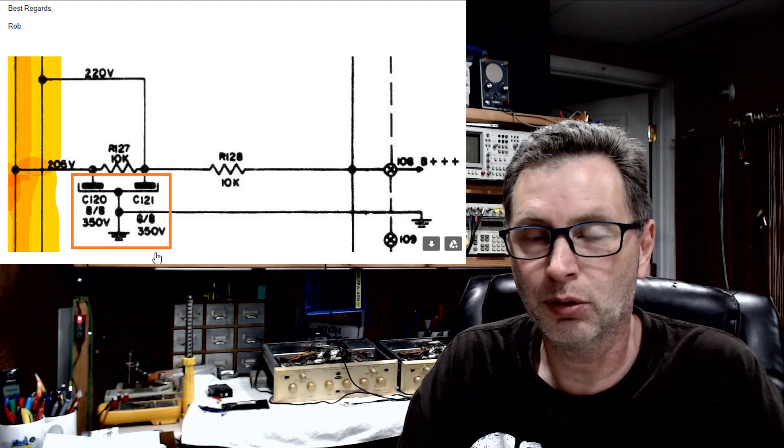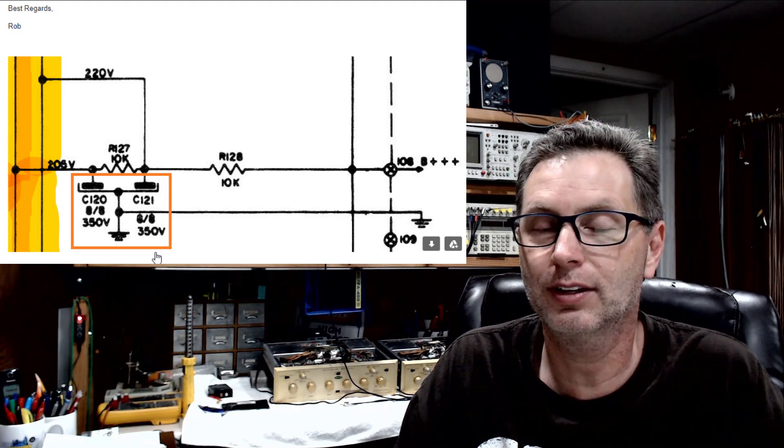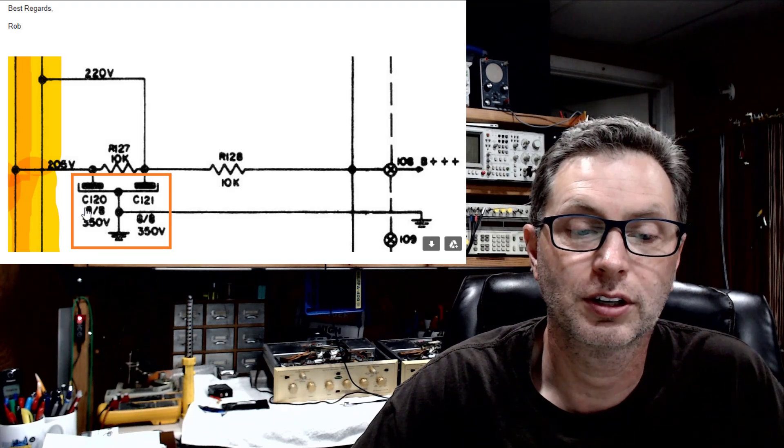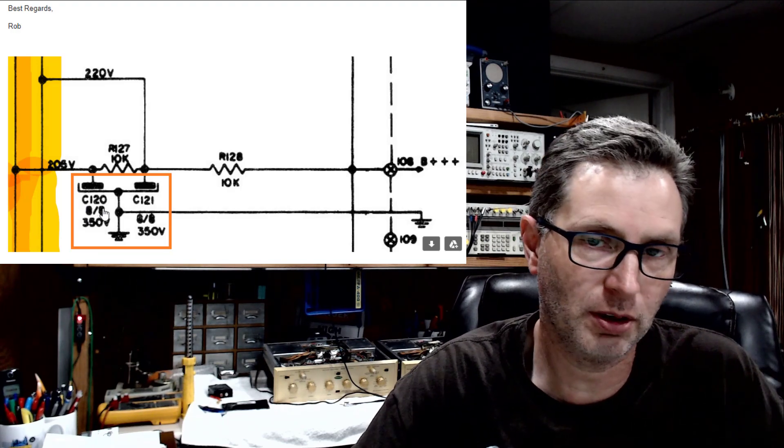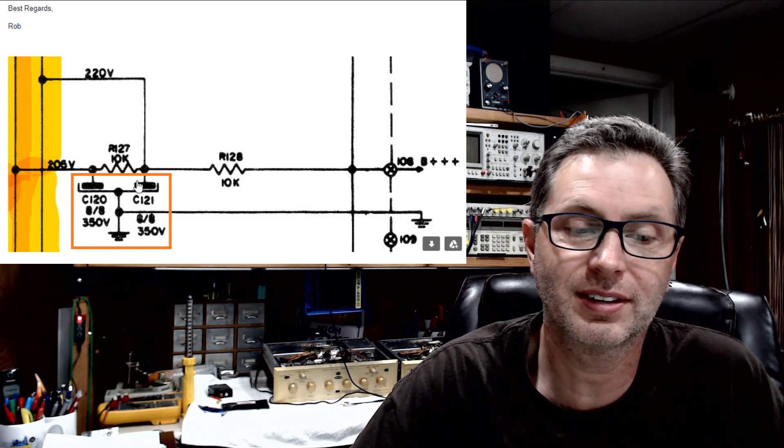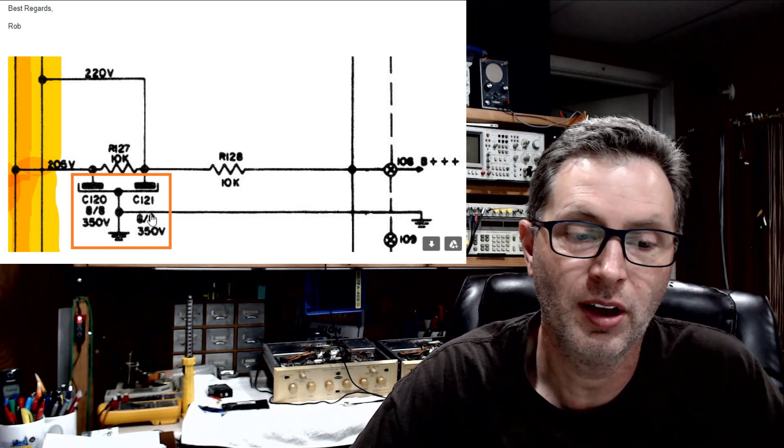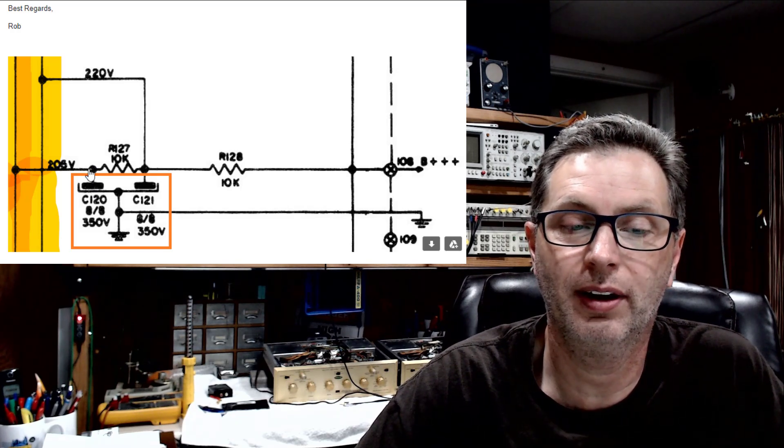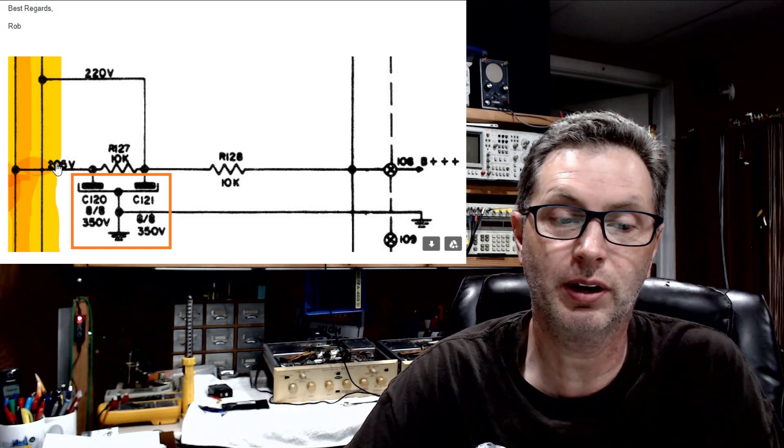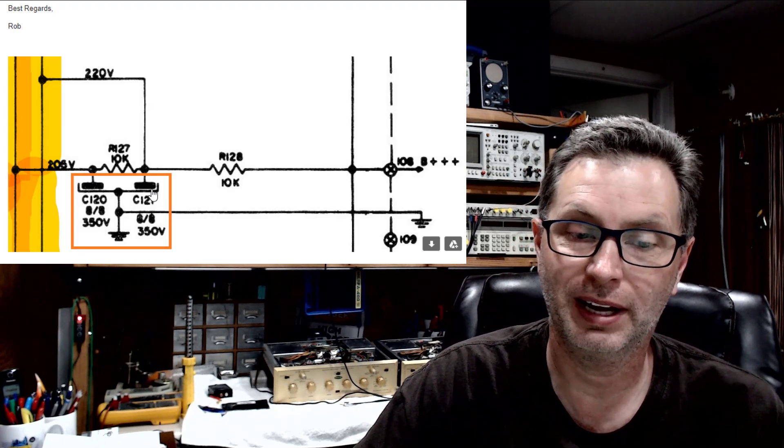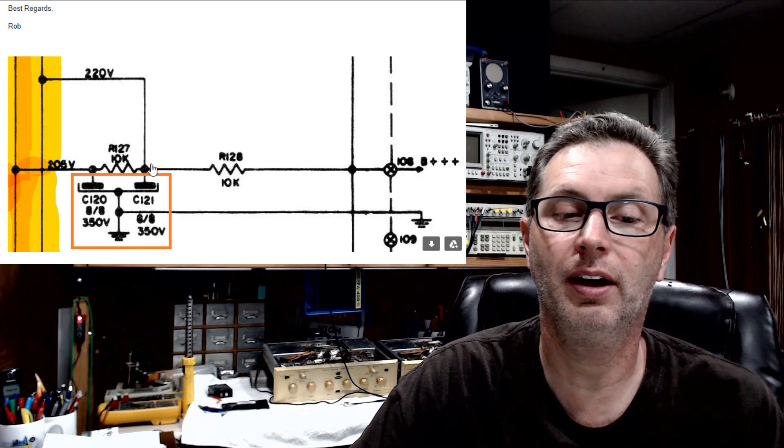If you'll notice here, C120, so on the schematic capacitor 120, and C121 are both inside of this same little device. And if you'll notice, the positive terminal for C120 is right here and it's tied on this side of the resistor at 206 volts. And the other capacitor C121 is tied on the other side of this resistor where you have 220 volts.